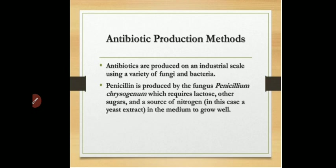Generally, antibiotics are produced on an industrial scale using a variety of fungi and bacteria. Penicillin is produced using the fungus Penicillium chrysogenum, which is a highly stable strain that can produce penicillin in large amounts at the industrial level, and is selected for high-yield production.